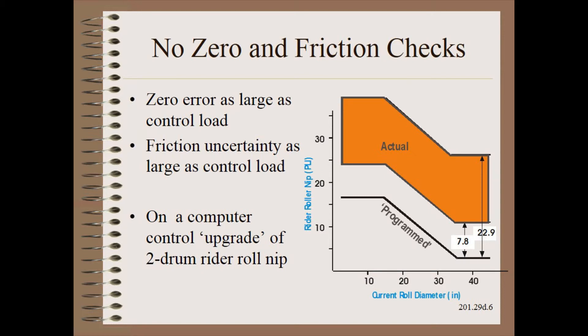These examples I've shown here are by no means unusual. In fact, the majority of winder nip loads may be more than 20% different than the computer displays, and errors greater than a factor of two are not uncommon. You cannot safely assume that the machine builder has done their homework in this regard. Some have, but most have not.